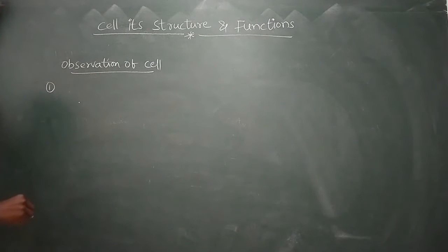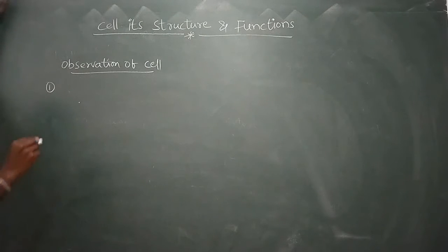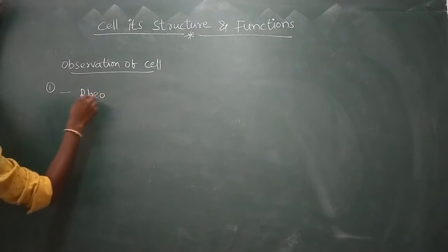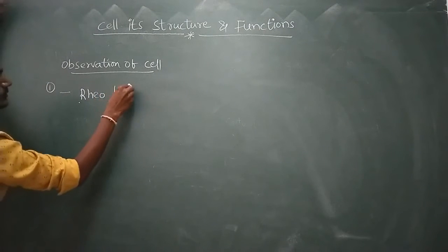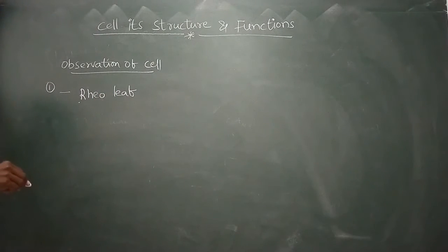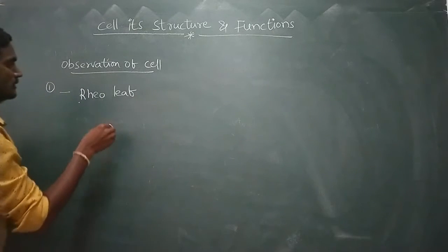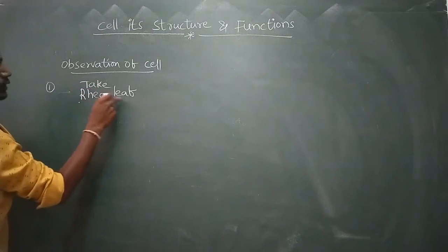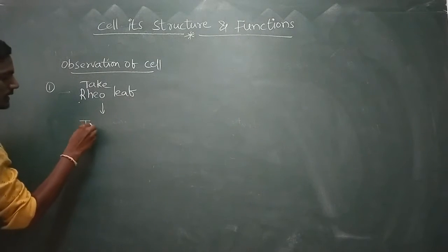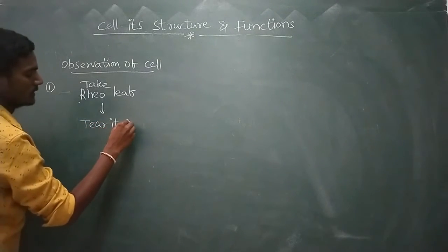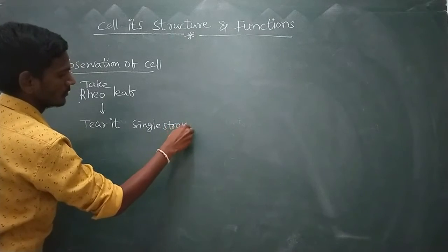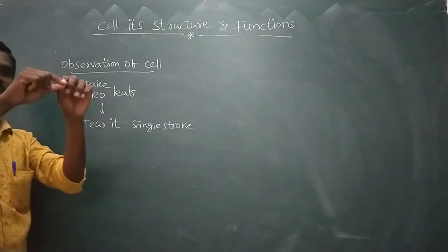This is a lab activity and it has a procedure. First, we have to take a leaf from a plant called Rhoeo. Take a Rhoeo leaf and tear it with a single stroke.